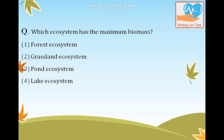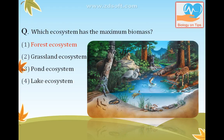Which ecosystem has the maximum biomass? The answer is the forest ecosystem. The forest ecosystem consists of a huge amount of plants, which increases the biomass to a great extent. The highly productive ecosystems are tropical rainforest, coral reef, estuaries, and sugarcane fields.